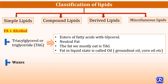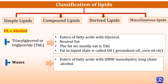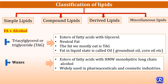Fat in the liquid state is called oil — for example, vegetable oils like groundnut oil and corn oil. Waxes are esters of fatty acids with high molecular weight monohydric long-chain alcohols. They are not important in human metabolism but are widely used in pharmaceutical and cosmetic industries to make certain lotions and ointments.